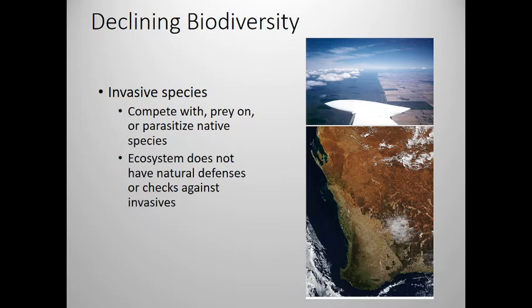Invasive species are often species that come in with really high reproductive rates and basically steal all the nutrients and food sources from the native species that are there. The reason they can do that is often that the ecosystem doesn't have the natural defenses or checks — for instance, you might have a predator that keeps that species in low numbers back in its native range.